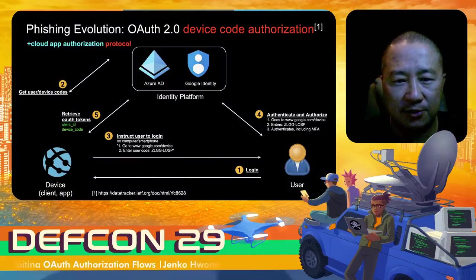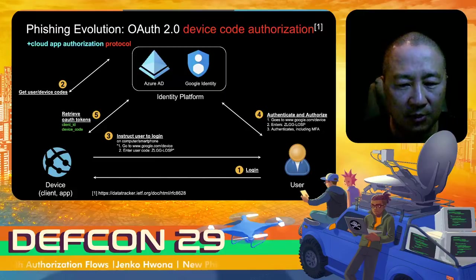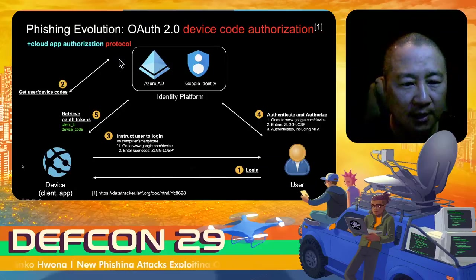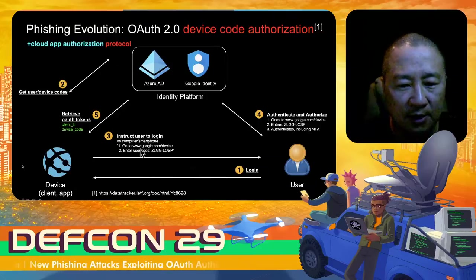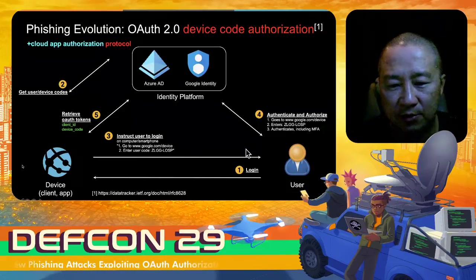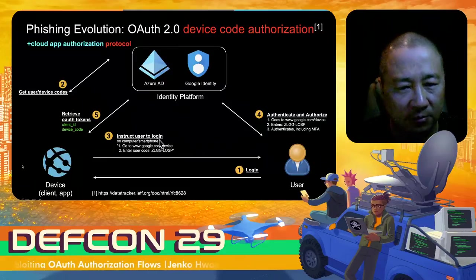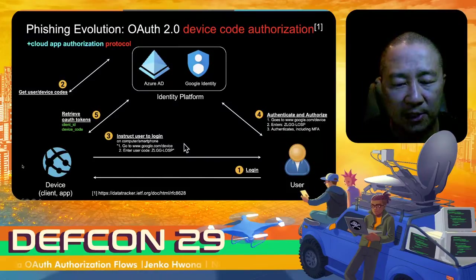Let's look at device code authorization a little bit deeper. What really happens under the hood: a user is trying to log in or do some task, the device gets some user codes and sends a URL with that user code to the user so they can authenticate. Once they do, OAuth tokens are created which are then accessible from the device.